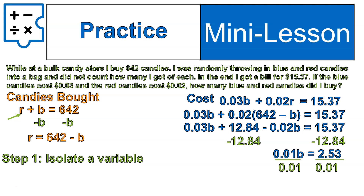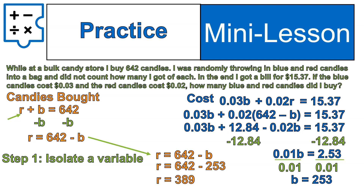Dividing both sides by 0.01 gives a final answer: B equals 253. That means I bought 253 blue candies. Again, you're not going to get half a candy or a negative candy — so that's a good check. You should have a nice clean number at the end. Then a quick subtraction tells us we have 389 red candies and 253 blue candies. Done.